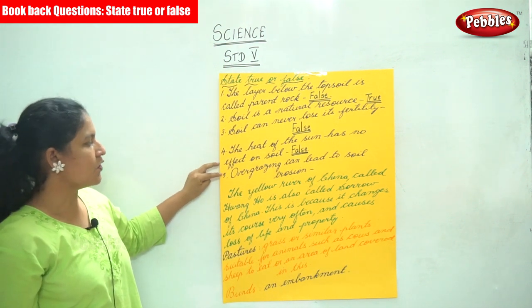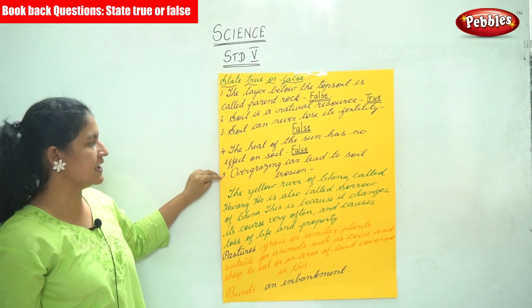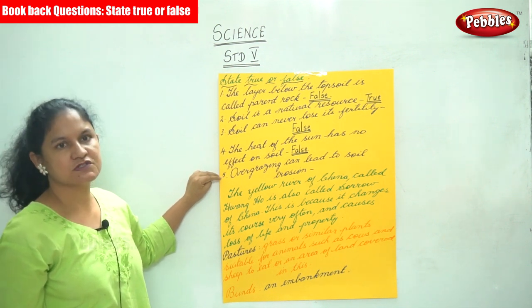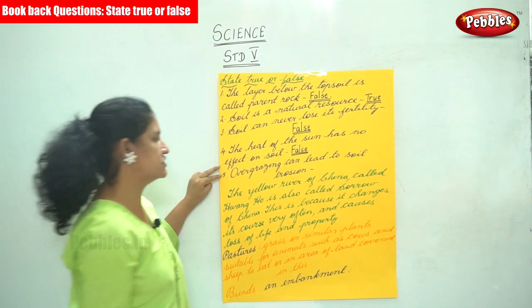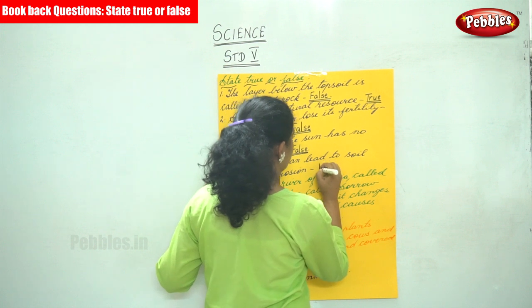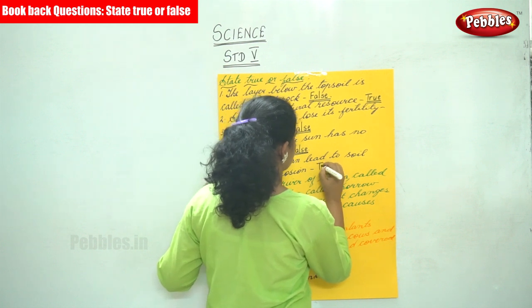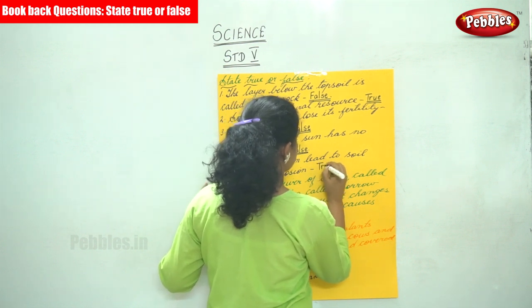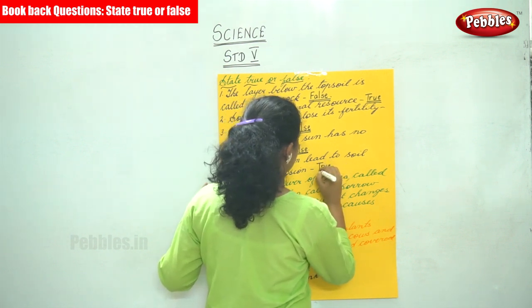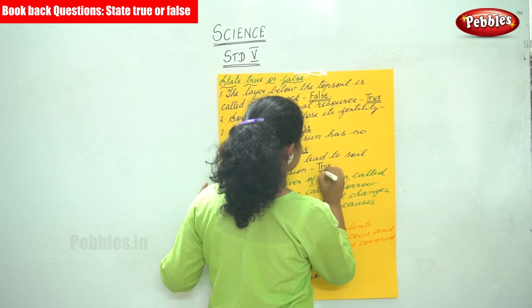The fifth statement is: overgrazing can lead to soil erosion. It is true. Overgrazing can lead to soil erosion.